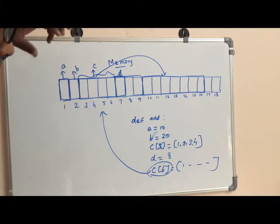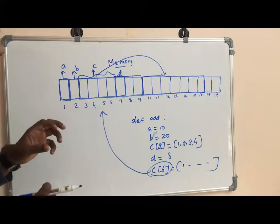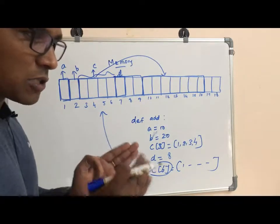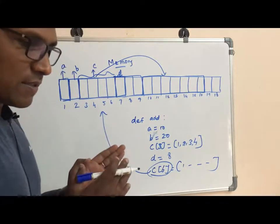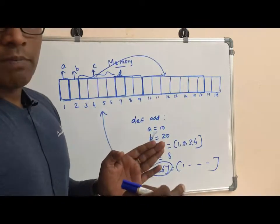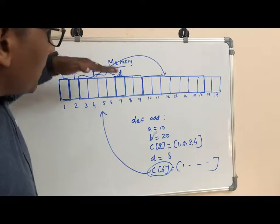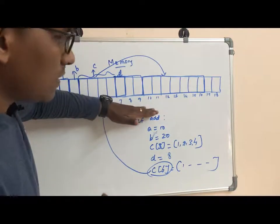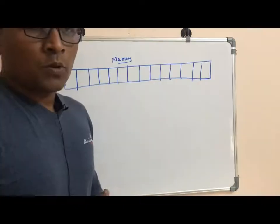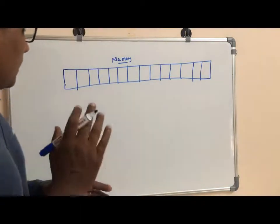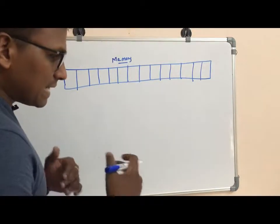If you have a block, you can select the size of the memory block. This is how the memory manager works. If you have a block, you can understand this. You can understand the list and linked list. Explain the list and how to explain the linked list. What is the list, and how to explain the linked list? This is how to save the list and how to locate the memory. The linked list is how to locate the memory.